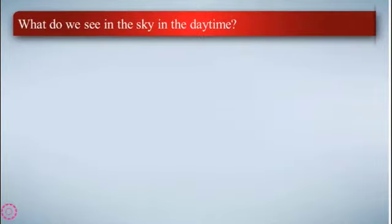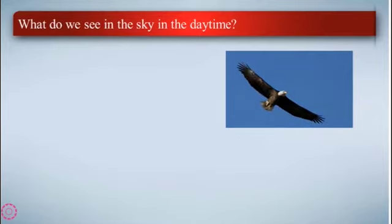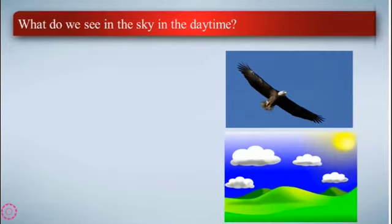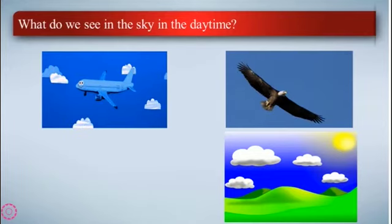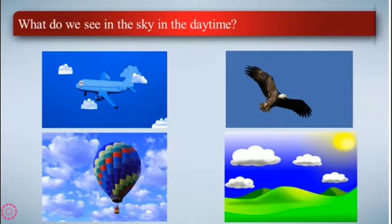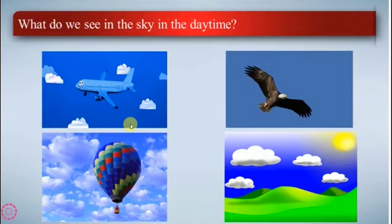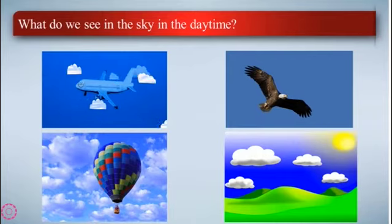What do we see in the sky in the daytime? There are birds flying, the sun, clouds, planes, and balloons. We can see these things in the sky during the daytime.